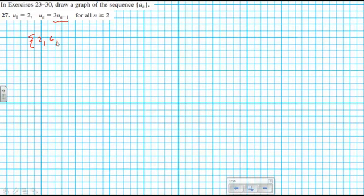So after this we get 18. After 18 we get 54. After 54 we get 162, and so forth.